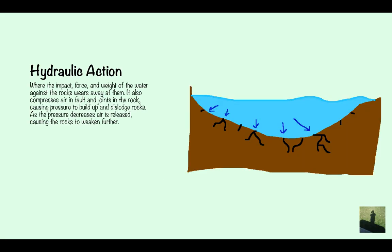The first type is hydraulic action. This is where the impact force and weight of the water against the rocks wears them away and it also compresses the air in faults and joints in the rock causing pressure to build up and dislodge rocks. As the pressure decreases, air is released causing the rocks to weaken further. You can see in the diagram here you've got the force and pressure of the water creating joints and cracks. The gas inside these cracks are going to get compressed even more making them even bigger.